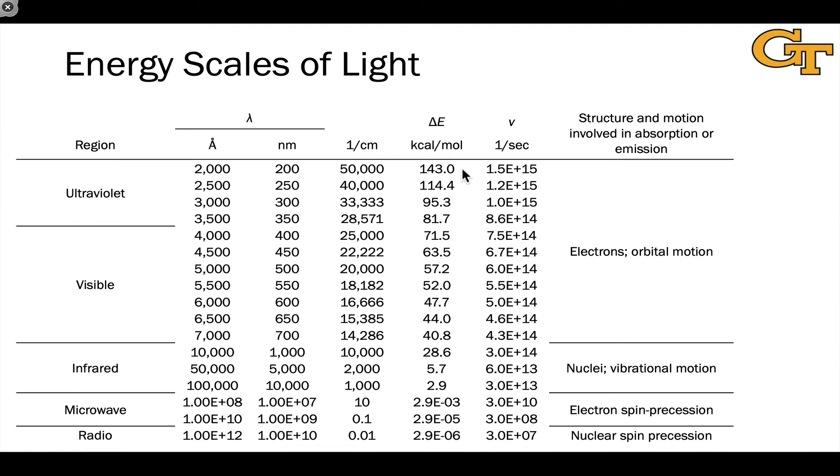We go all the way from 143 kilocalories per mole, which is enough to break a CH bond, quite strong in general, all the way down to radio waves where we're at 2.9 times 10 to the negative 6 kilocalories per mole, which is barely enough to excite a nuclear spin transition for, for example, NMR. So, massive range. There we're talking about, eight orders of magnitude from ultraviolet to radio waves in kilocalories per mole.